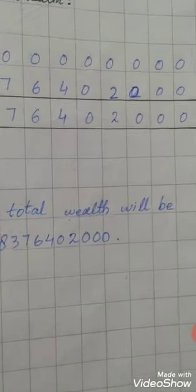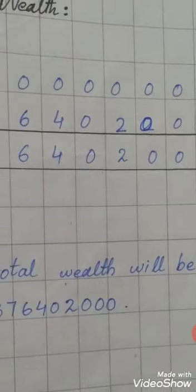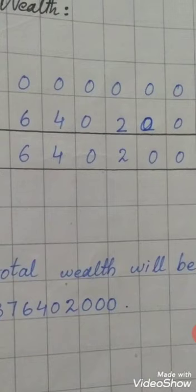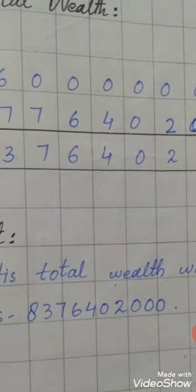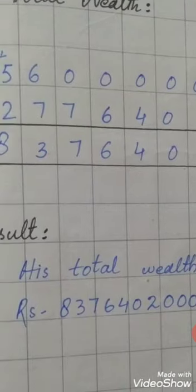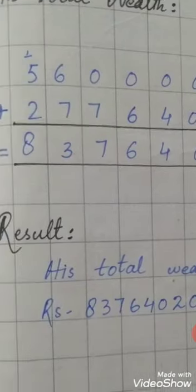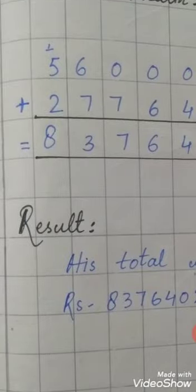Now adding: 5,600,000,000 plus 2,776,402,000. Starting from right: 0 plus 0 is 0, 0 plus 0 is 0, 0 plus 2 is 2. 0 plus 4 is 4, 0 plus 0 is 0, 6 plus 6 is 12, write 2 carry 1. 0 plus 7 is 7 plus carry 1 is 8, 0 plus 7 is 7, 0 plus 7 is 7. 5 plus 2 is 7, giving us 8 in this position.